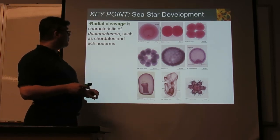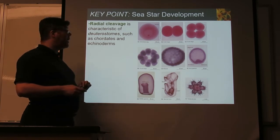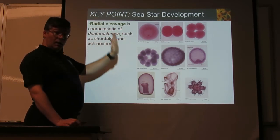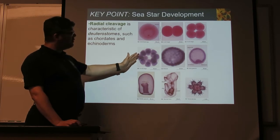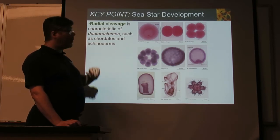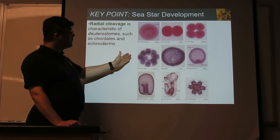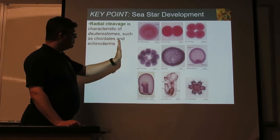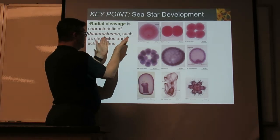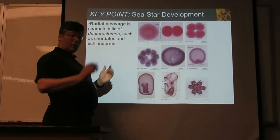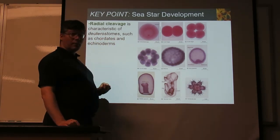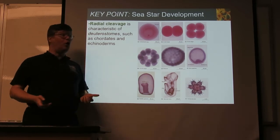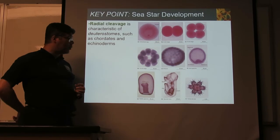Most of the invertebrates, though, are protostomes with a different pattern, as you'll see in a moment. Radial cleavage, basic idea: the first several divisions of the cell, all of the parts look the same. Each of those cells formed by division match — like radii of the sphere, cut it, and you get these matching cells. It's not until rather further on that you start to see differences between the cells.